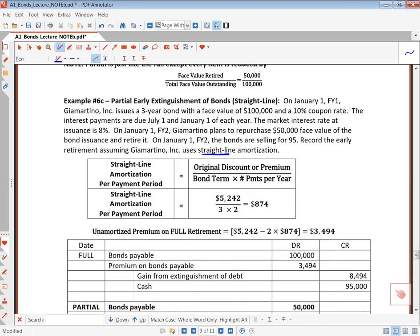All right, just to reorient you to the bond problem, it's a three-year bond with a $100,000 face value, and on January 1 FY2, which is a year after the original issuance, they decide to repurchase only $50,000 of the total $100,000 face value. At that time, the bonds are selling for $95,000.